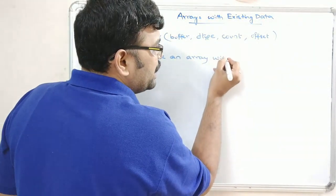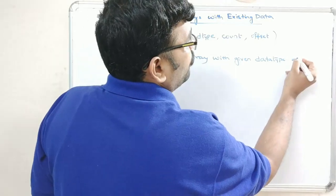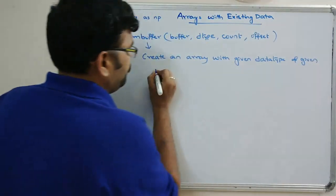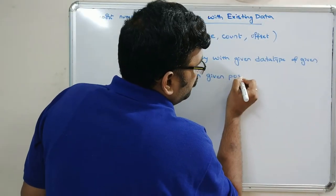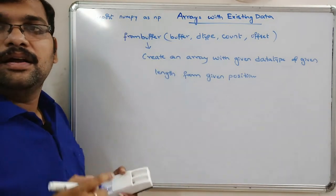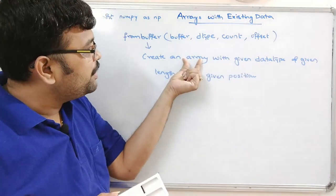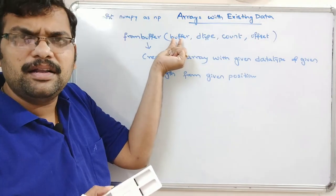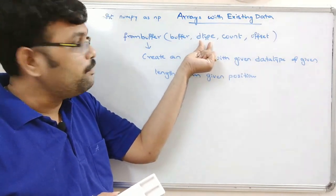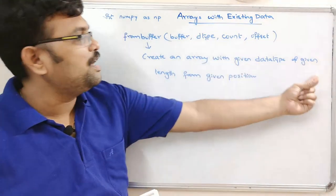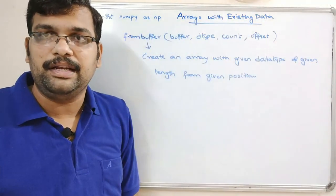The `frombuffer` function creates an array with a given data type, of a given length, from a given starting position. The buffer contains the existing data; the data type is specified by the user; count restricts the length of data returned; and offset specifies the starting position from which data is read.